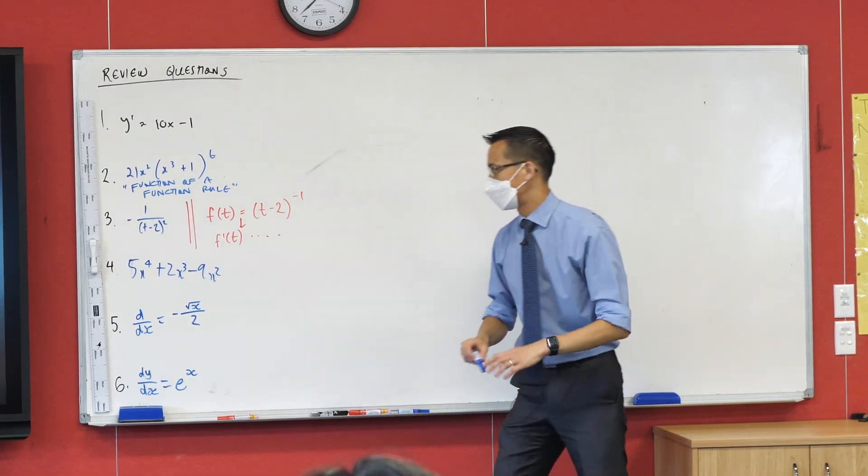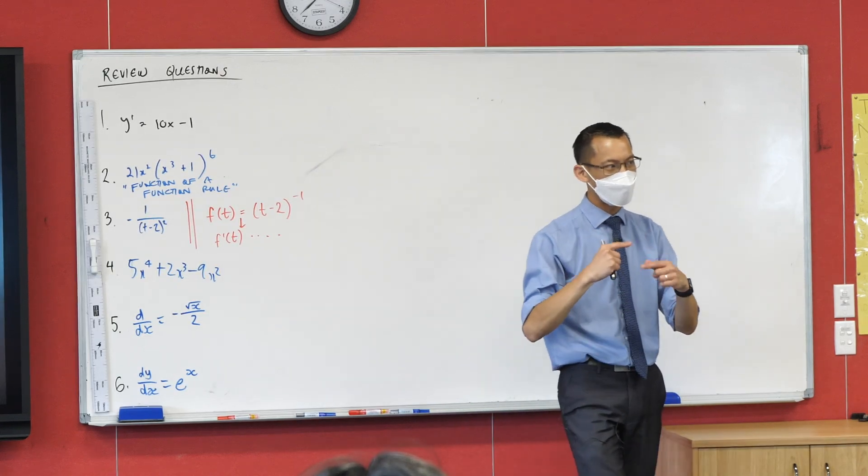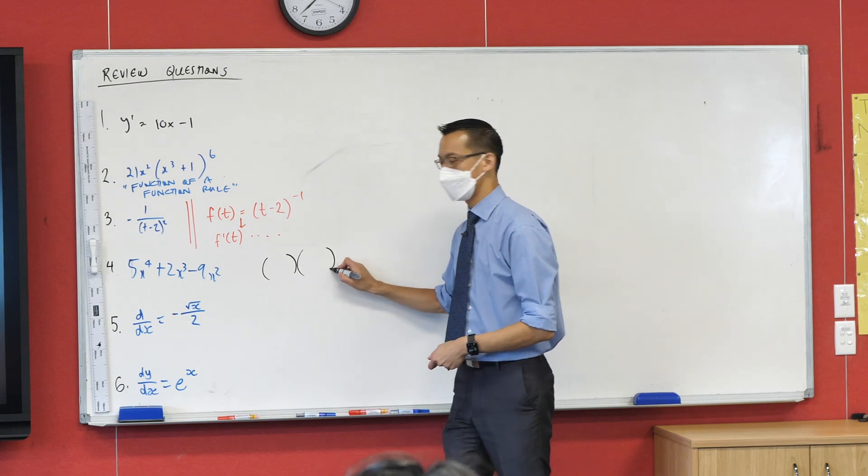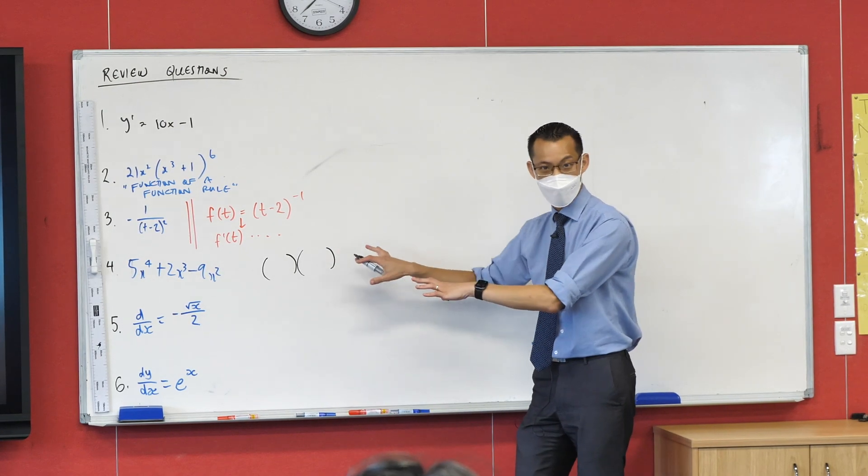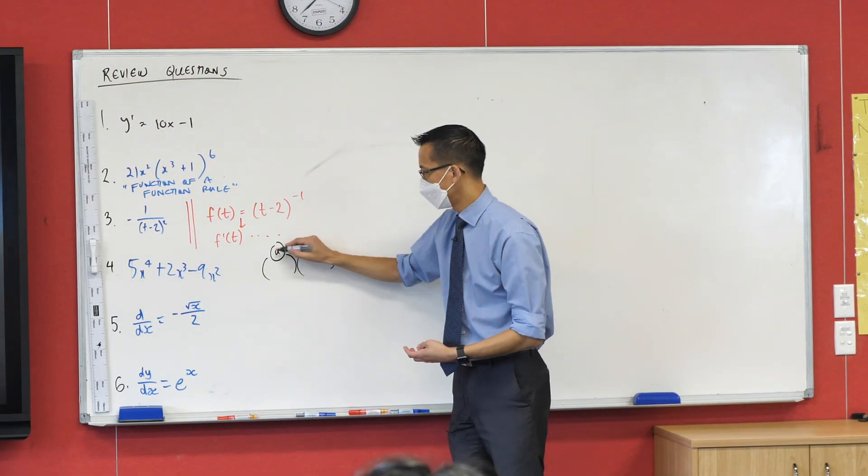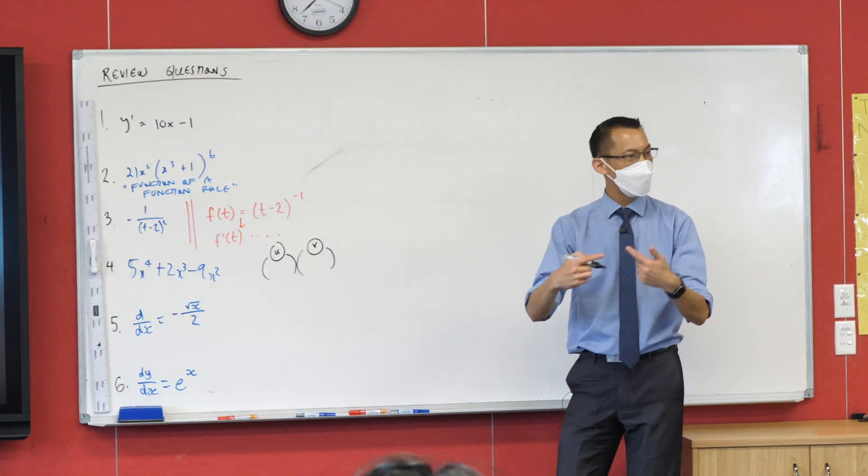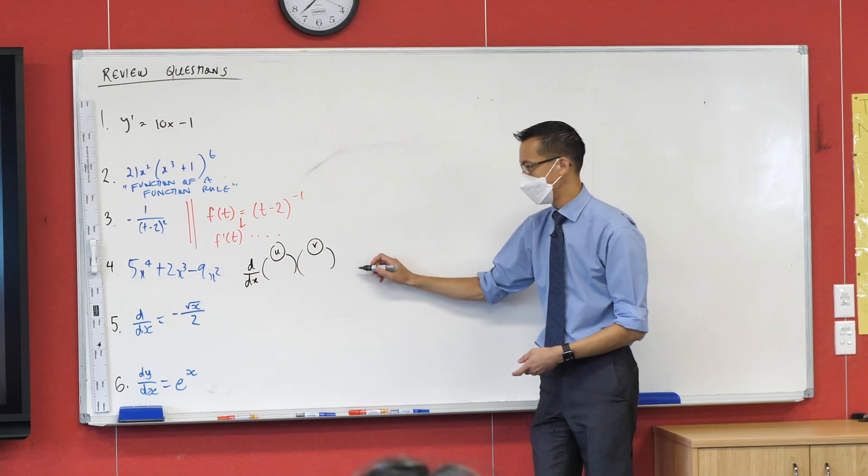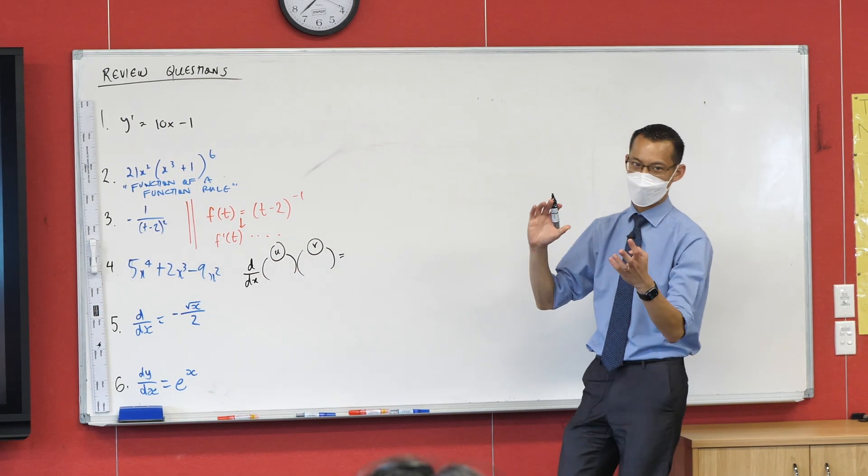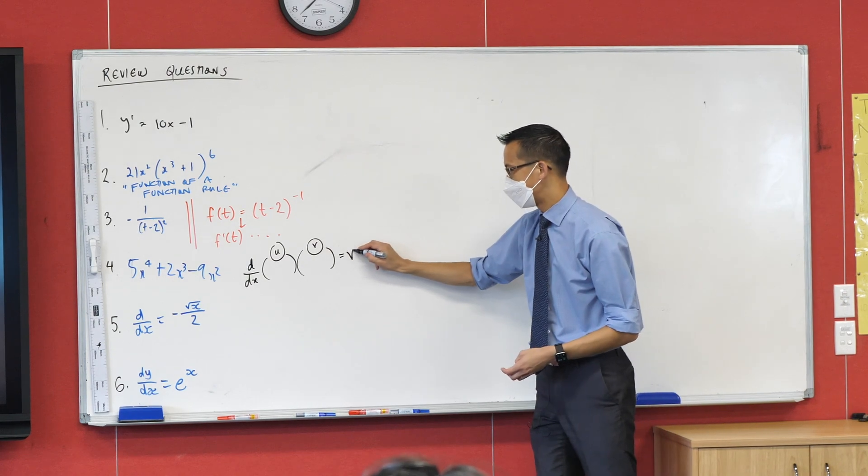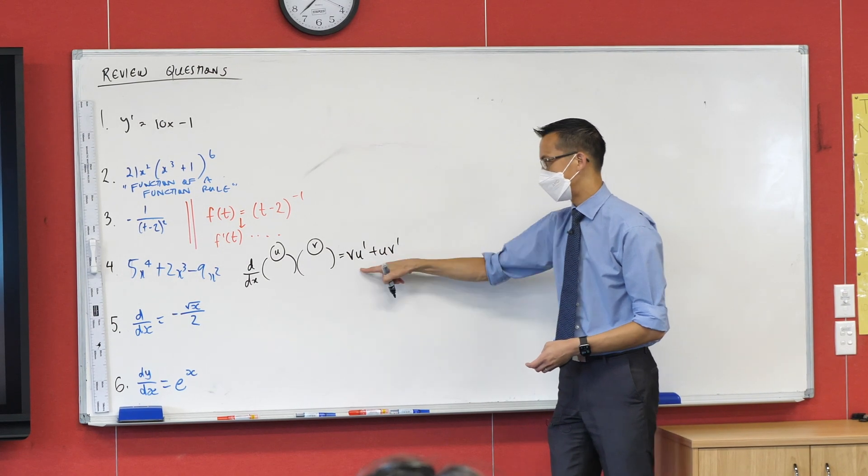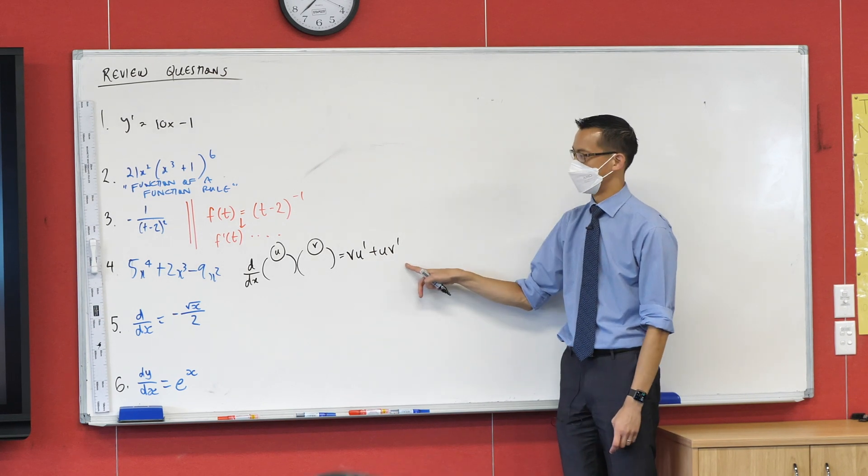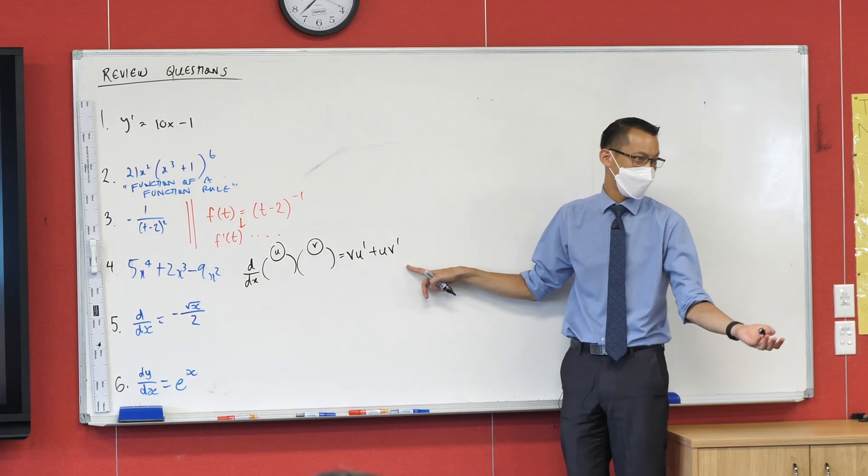Now I walked around and I saw a few people struggling a little bit to remember the product rule. So if you've got something times something else, right? We designate each of the products, we give them a name. Call one u, call one v and then your derivative, if you're differentiating this, whatever this happens to be, the way I learnt it, which is kind of just nice and easy to say, is that it's a vuv. V u dash plus u v dash. You just say it aloud, vuv, which just sounds ridiculous and will hopefully help you remember it for next time, right?